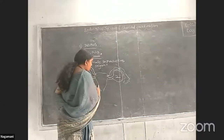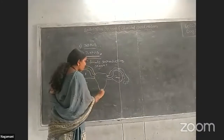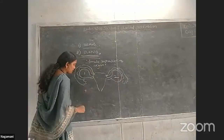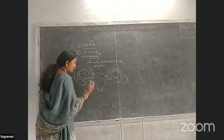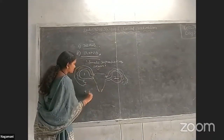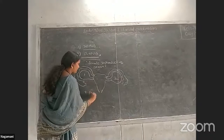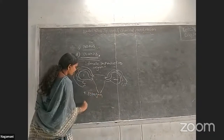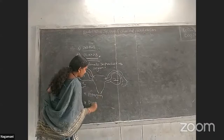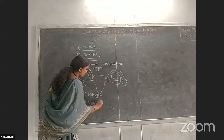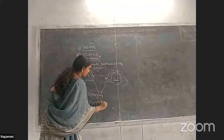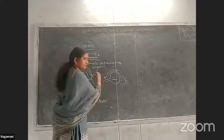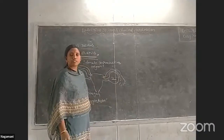The hormones produced from the ovaries are two types of very important female sex hormones: estrogen and progesterone.